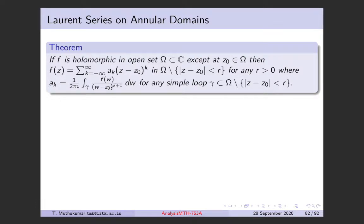This is valid in an annular region: you have z₀ where the function is not holomorphic, you remove a ball of radius r, and you have an annular region where f is holomorphic. The coefficient aₖ is given by the integral formula — similar to before — and this is valid for any gamma which is a simple loop contained in the annular region.